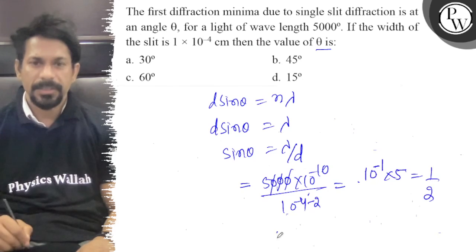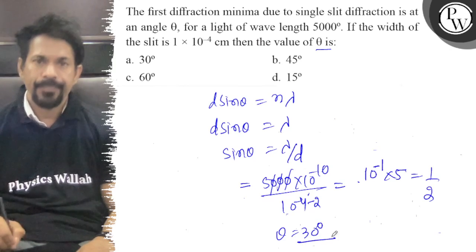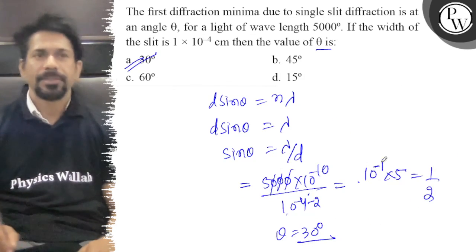So sin θ equals 1/2, therefore theta is 30 degrees. The right answer is A. All the best.